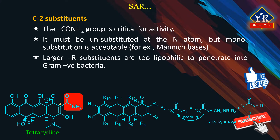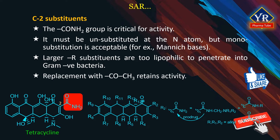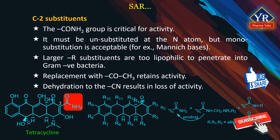Larger alkyl substituents are likely to be too lipophilic to penetrate into gram-negative bacteria. The monosubstituted tertiary butyl amide displays gram-positive activity but is essentially inactive against gram-negative organisms. Larger alkyl groups may alter the normal keto enol equilibrium of the C1, C2, C3 conjugated system and thus diminish inherent antibacterial activity. The replacement of the C2 carboxamide group with a simple methyl ketone retains some antibacterial activity but this is weak in comparison to the parent tetracycline. Dehydration of the carboxamide to the corresponding nitrile results in loss of activity, and electronic factors as well as the loss of the carbonyl moiety are likely responsible for this phenomenon.